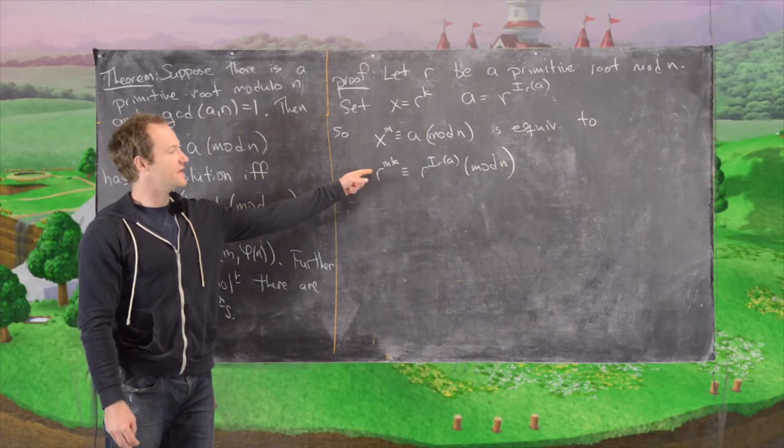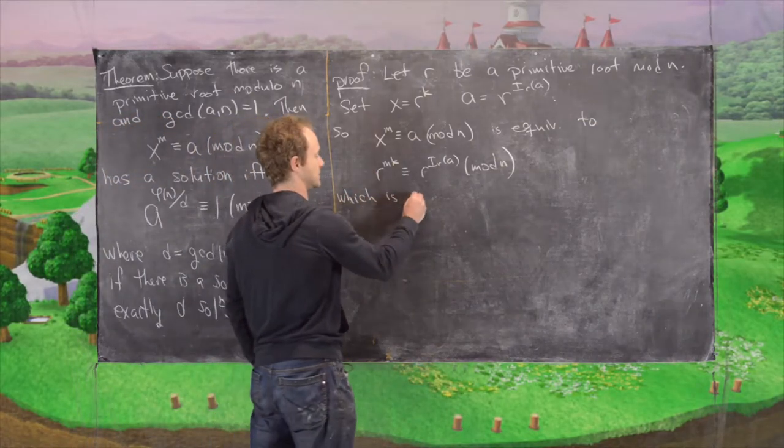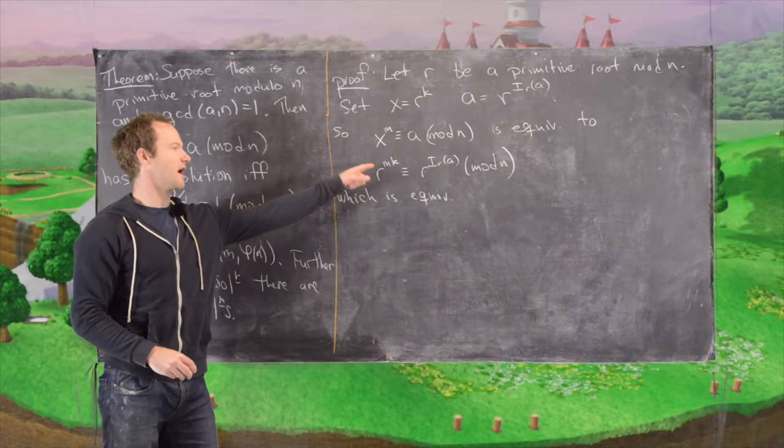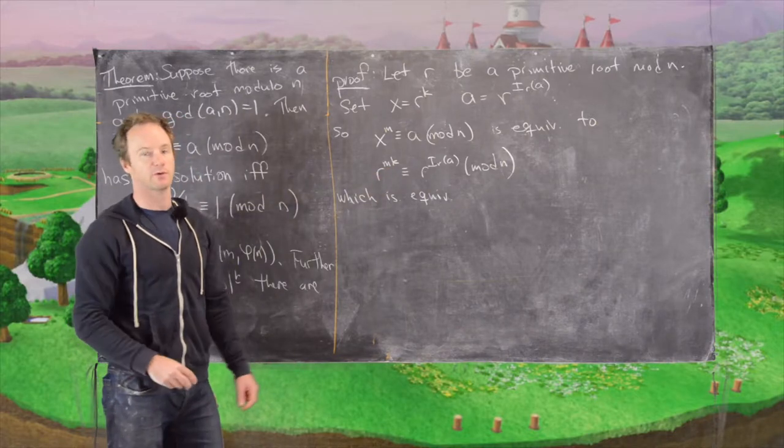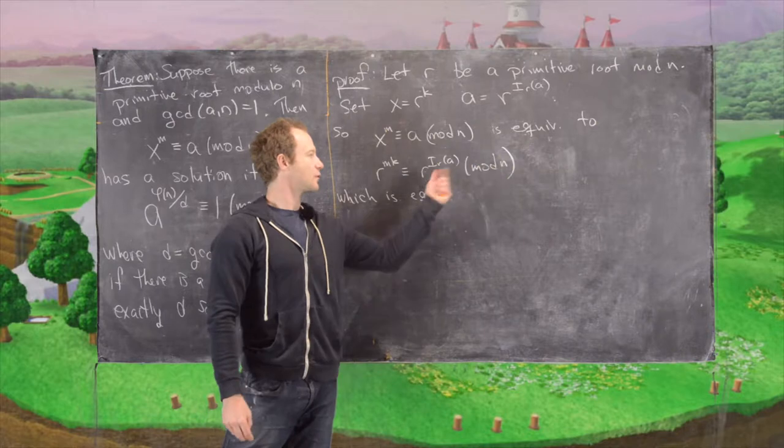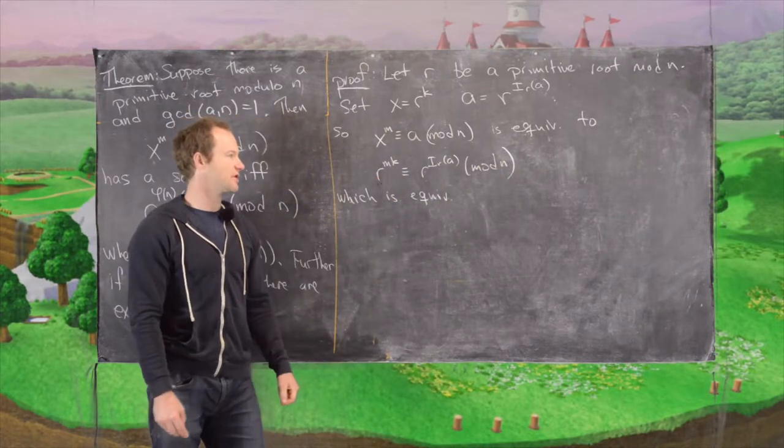This is equivalent to some linear congruence where we remove the exponents. But when we remove the exponents from the basis, we have to work modulo the order of r, which in this case is modulo phi of n.